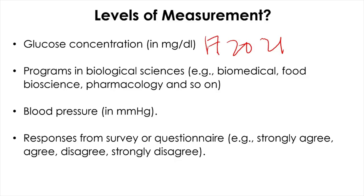Any two consecutive concentrations have the same interpretation throughout the scale. Now you need to check if this variable has an absolute zero point representing the absence of the measurement. And it does — it can have zero milligrams per deciliter to represent the absence of glucose concentration. So that makes glucose concentration a ratio level of measurement.